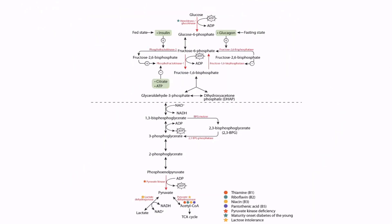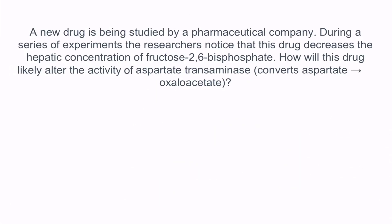So you can see that fructose-2,6-bisphosphate acts as an on-off switch for glycolysis. Let's do a question. A new drug is being studied by a pharmaceutical company. During a series of experiments, the researchers noticed that this drug decreases the hepatic concentration of fructose-2,6-bisphosphate. How will this drug likely alter the activity of aspartate transaminase? This enzyme normally converts aspartate to oxaloacetate. Essentially this question is asking how amino acid metabolism will be altered during gluconeogenesis. Recall that decreased fructose-2,6-bisphosphate results in increased gluconeogenesis, so the catabolism of amino acids, glycerol, and other molecules will increase.